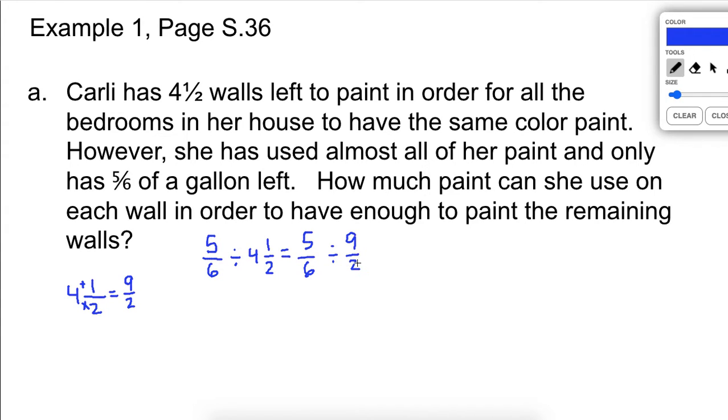Now, because this is a fraction, we can use the idea of rewriting it as a multiplication problem, which is what we've been doing, by finding the reciprocal of the divisor, which is nine-halves. So we end up with five-sixths. Notice that five-sixths has not changed at all through here. Five-sixths stays the same. And now we're going to multiply it by the reciprocal of nine-halves, which would be two-ninths. So we're multiplying by the reciprocal. That's the way we divide fractions.